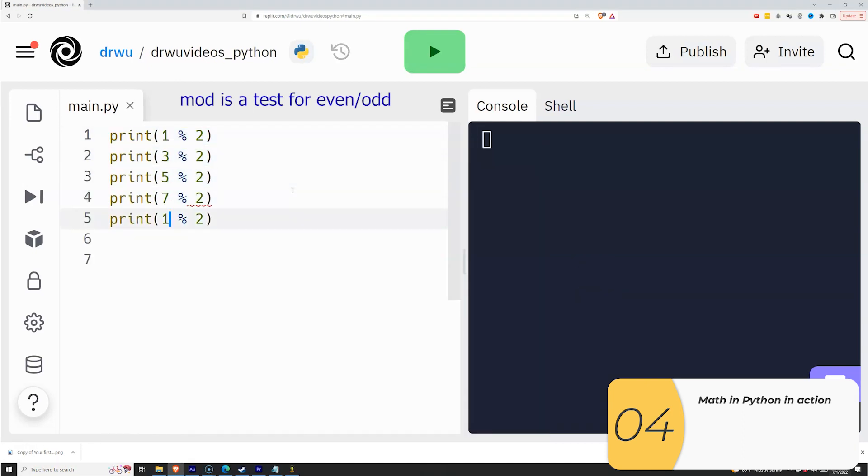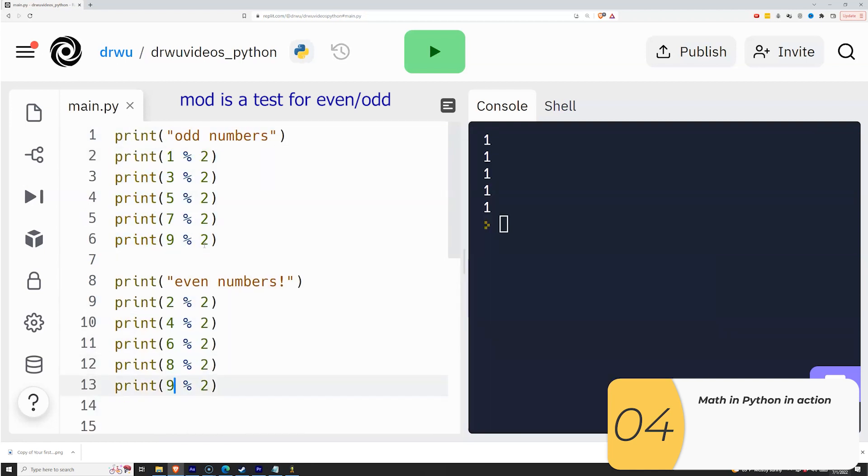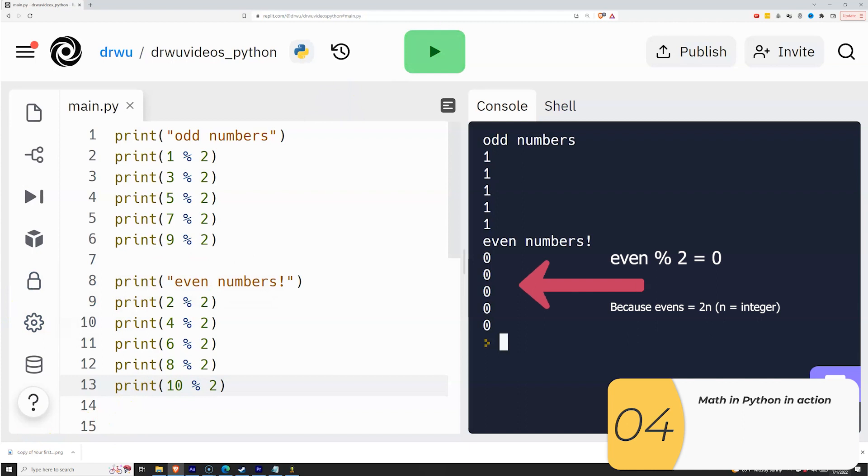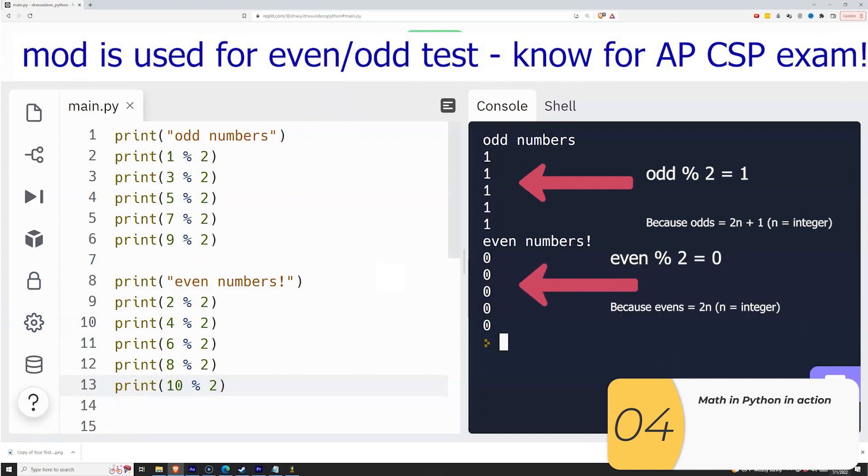If you take an odd number and you mod that with 2, the answer is always 1. And if you take an even number and you mod that with 2, the answer is always 0. And that's because even numbers can be written as 2n, where n is an integer. And odd numbers can be written as 2n plus 1, where n is an integer. And you might have done this in math. So this is something you'll want to know if you need to test for evens or odds, or if you're taking the APCSP exam.